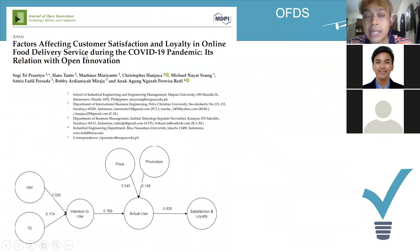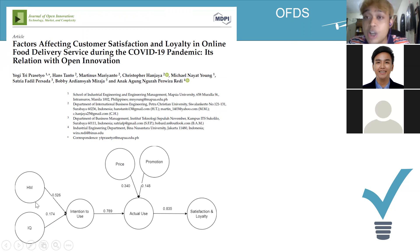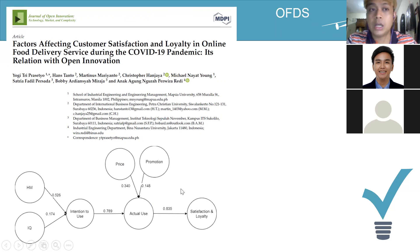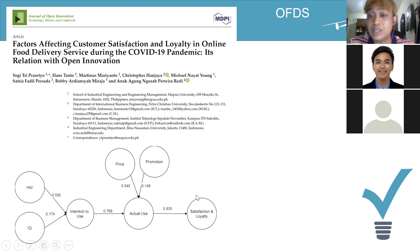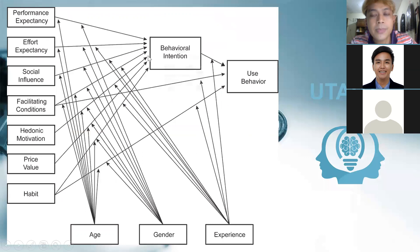Another publication was on online food delivery. I utilized the theory of planned behavior and found that hedonic motivation, information quality, price, and promotion are the keys for satisfaction and loyalty in online food delivery. It's not just about usability or perceived ease of use — it's more because of hedonic motivations and information quality.